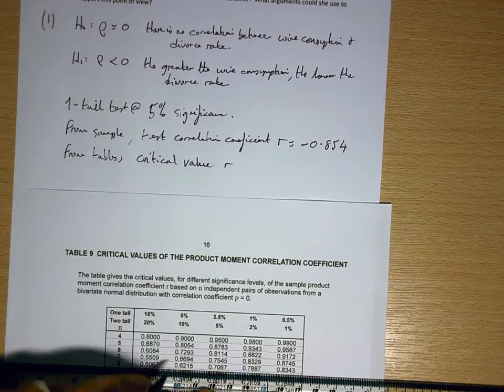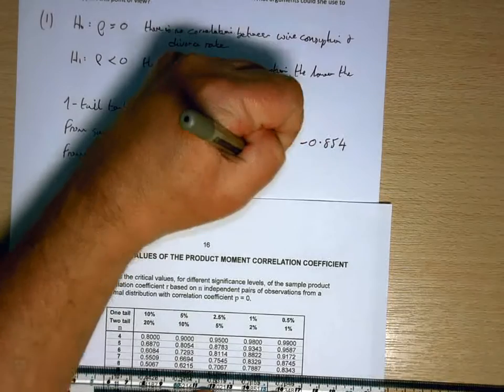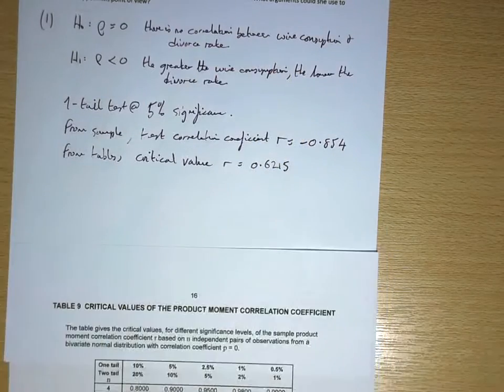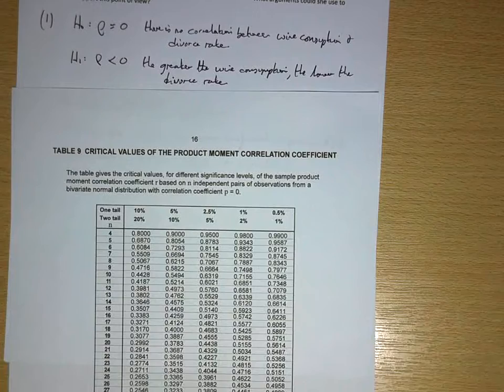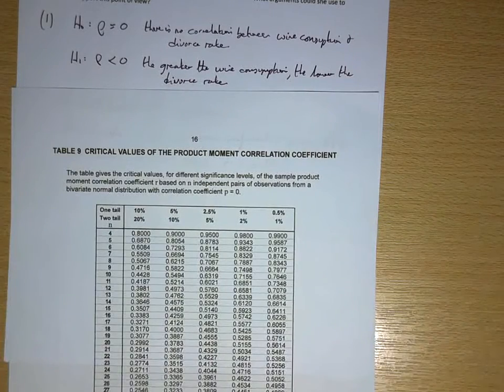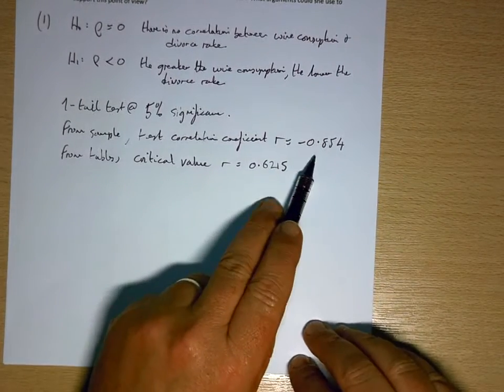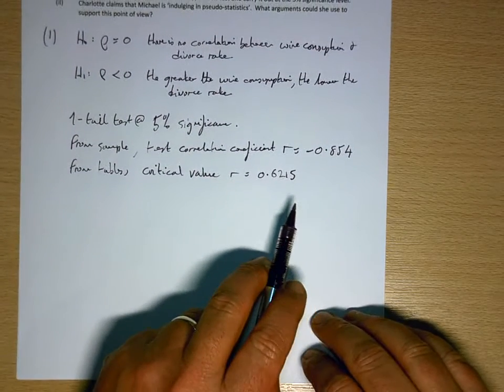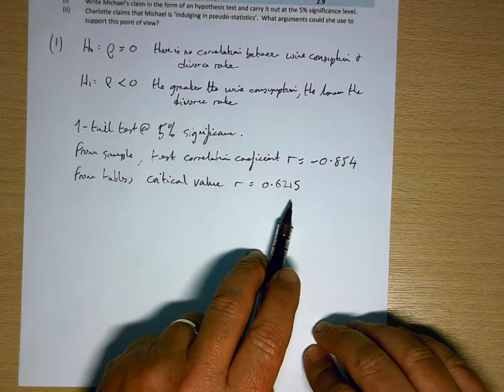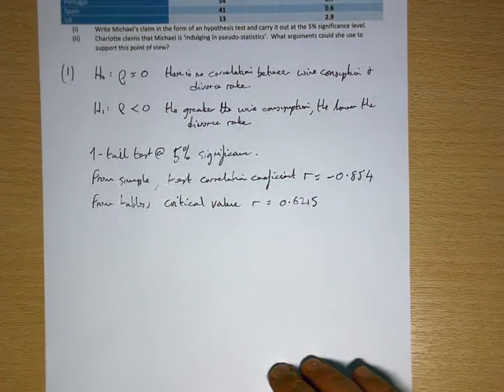So I've got 8, n is 8, at 5% 0.6215. Now you'll see the critical values on the table are all positive, so what we're actually comparing this with is the magnitude of that. We know we're looking for negative correlation, so rather than making that negative and complicating things, we make that positive.